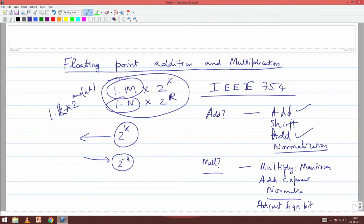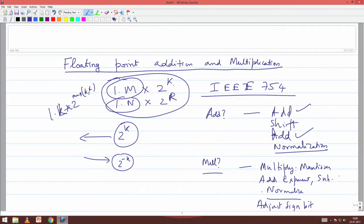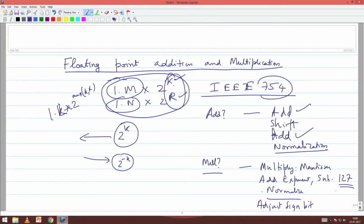An important point: since the exponents are stored in XS-127 (excess-127) format in IEEE 754, adding two stored exponents K and R gives a result in XS-254 format. So after adding K plus R, you must subtract 127 to get back to XS-127 format. This is a crucial step in floating point multiplication.